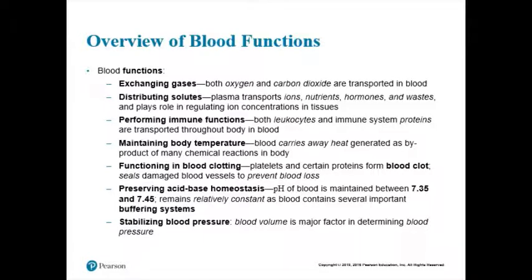Blood can do a lot of other things. Way back in A&P 1 in chapter 1, you talked about homeostasis — how you maintain a steady internal state. One thing you keep in homeostatic range is your temperature. When you're hot, your blood vessels dilate; when you're cold, they constrict. Turns out blood can carry heat. When you're really hot, you dilate blood vessels so blood carries the heat away to cool down. When you're cold, you constrict blood vessels so you're not losing that much heat.